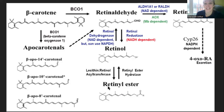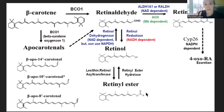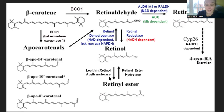Retinol esters are found in animal products. When we digest them, we digest away the fat, and then free retinol is absorbed into the intestinal tract. In our bodies, when we want retinol available, we use an enzyme called retinol ester hydrolase to get the retinol off the lipid it's stored on. When we want to store retinol, we use lecithin retinol acetyltransferase. This is what I've known about vitamin A metabolism from being a dietitian for 23 years — solid information.